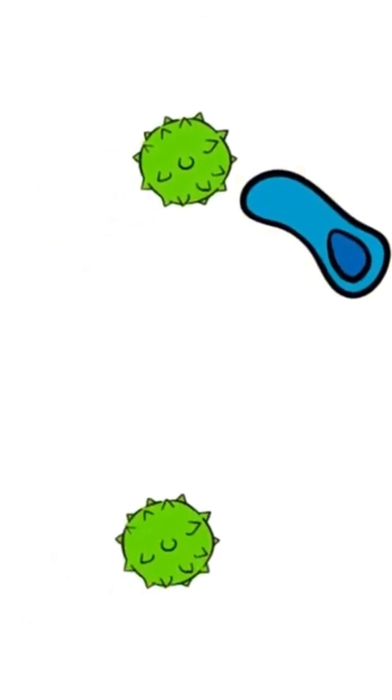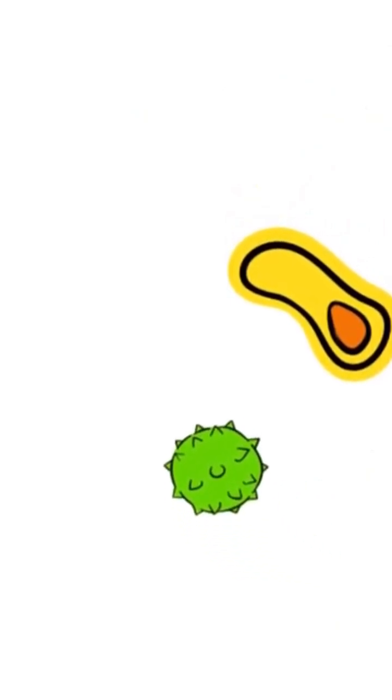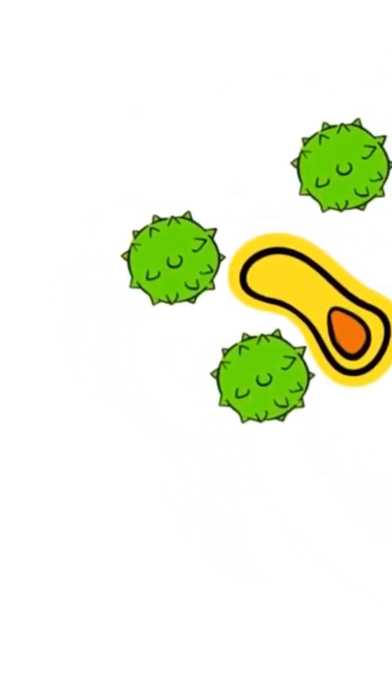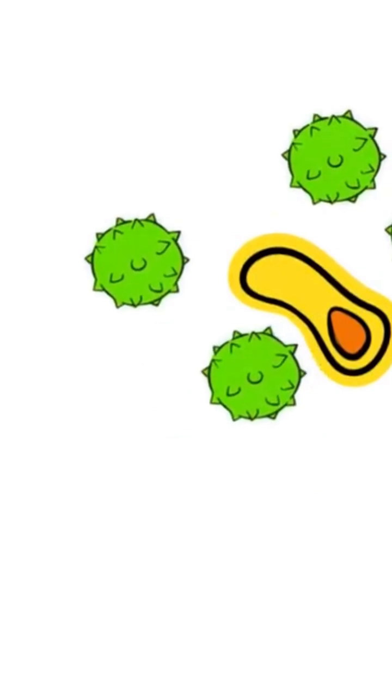Some cancer cells can hide from the immune system by making themselves seem like normal cells. And sometimes the immune system finds cancer cells, but it isn't strong enough to destroy them.